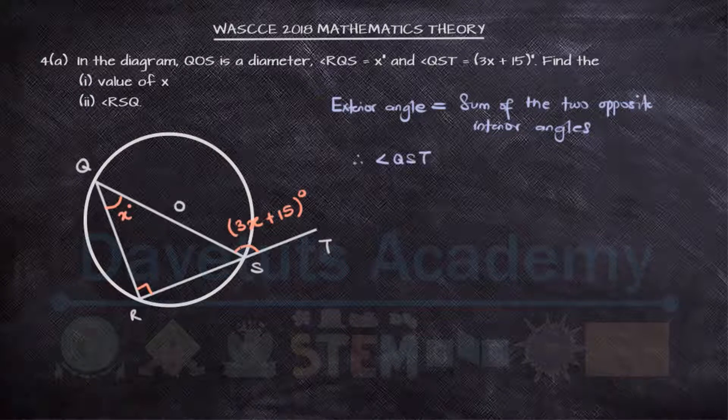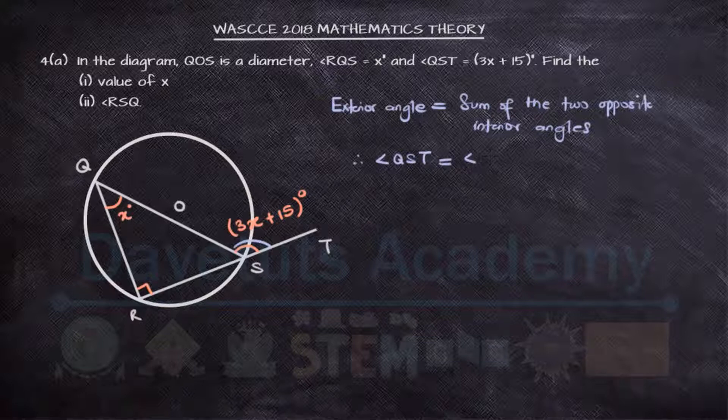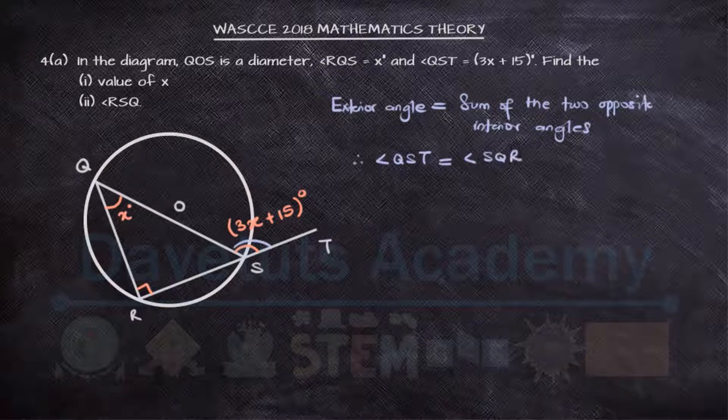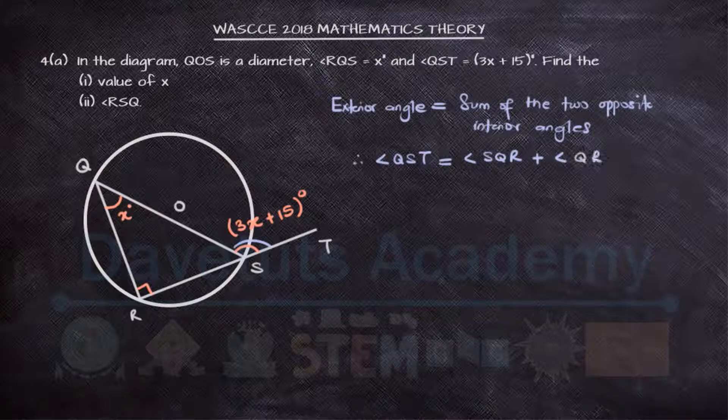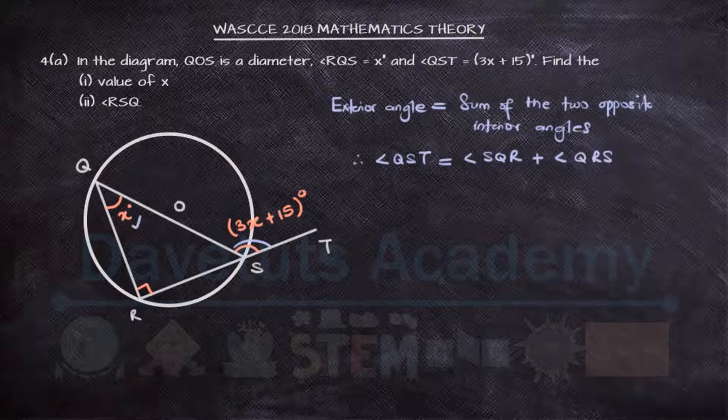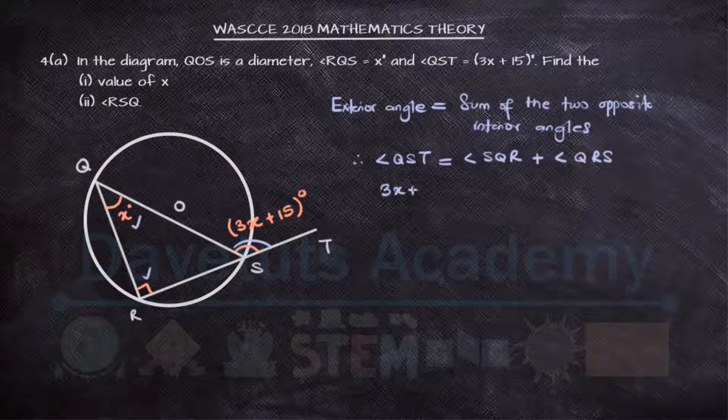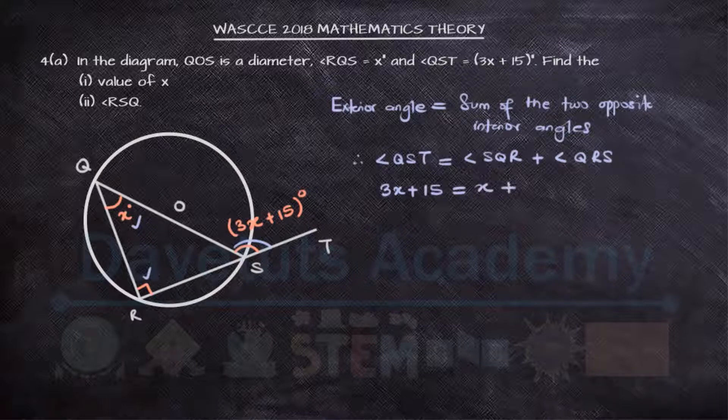The obtuse angle QoSd is equal to angle SQR plus angle QRS. Now, angle QRS has been depicted as 90, and the other one we know as X, so 3x plus 15 will give us X plus 90 degrees.